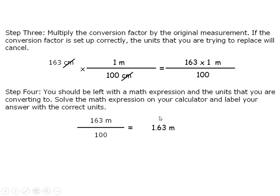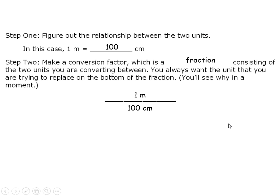Now why does this work, you might ask? The reason it works is when you multiply by a conversion factor that's properly set up, the conversion factor itself equals one.